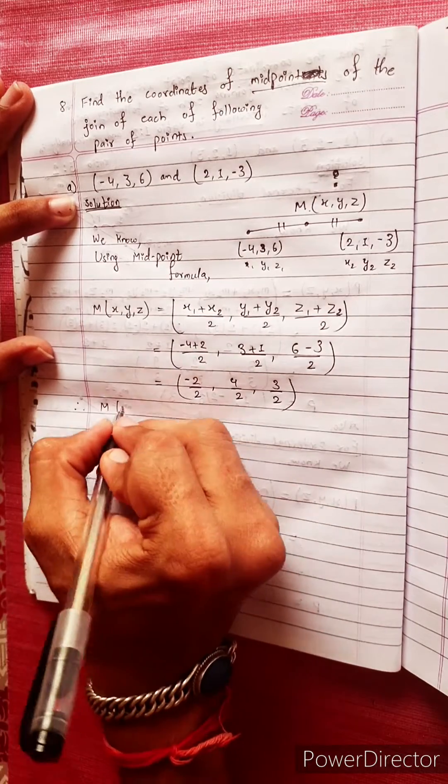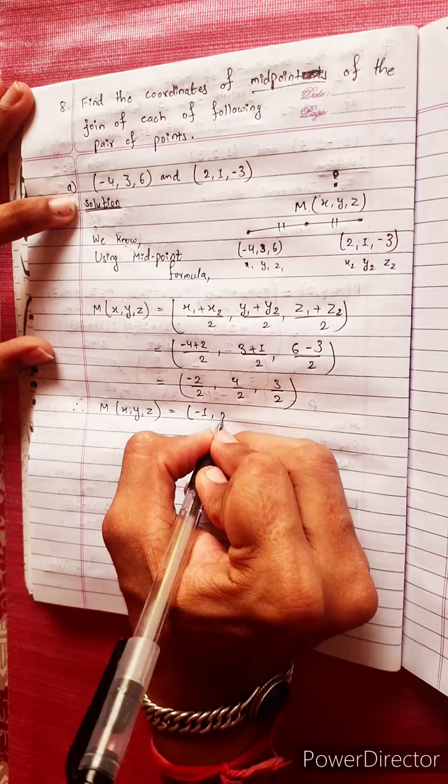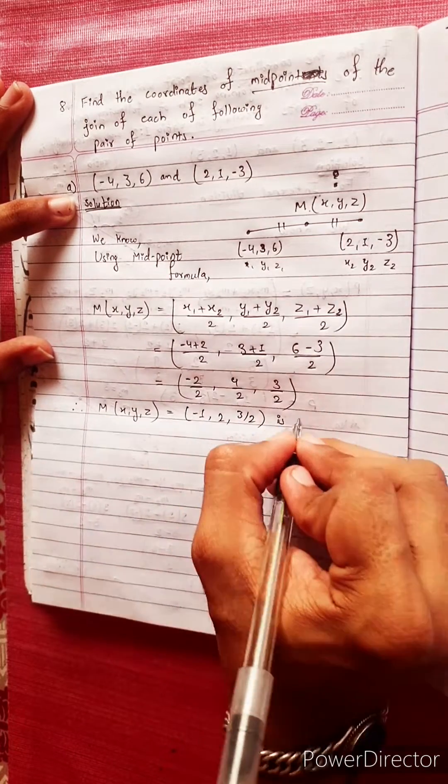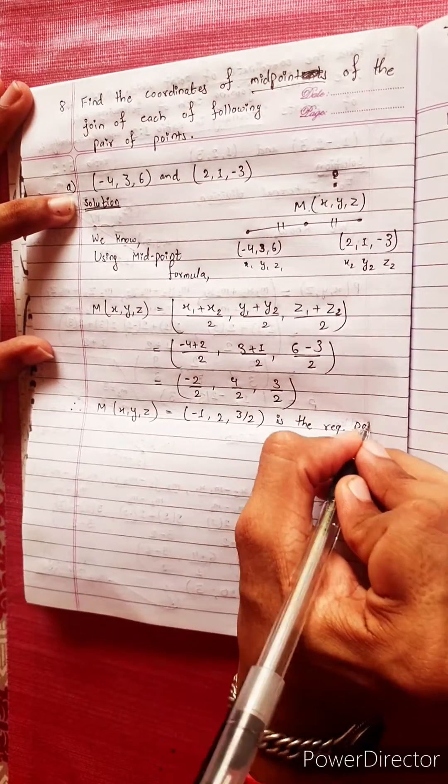Therefore M(X, Y, Z) equals to minus 1, 2, 3 by 2. This is the required point.